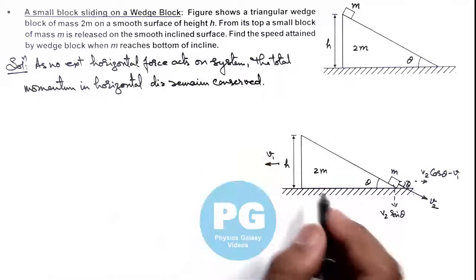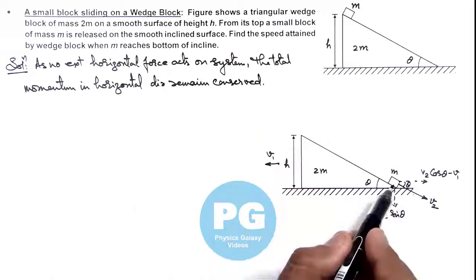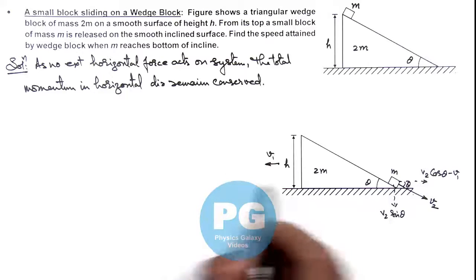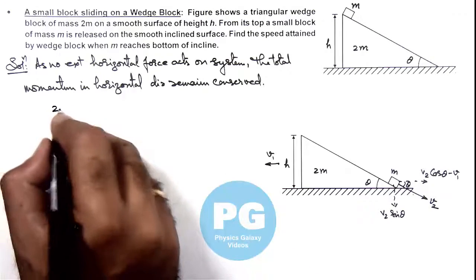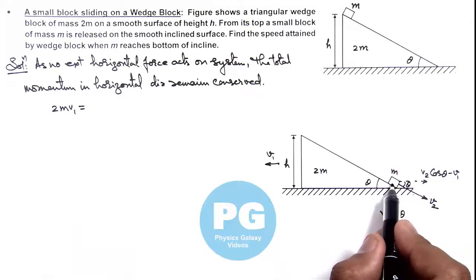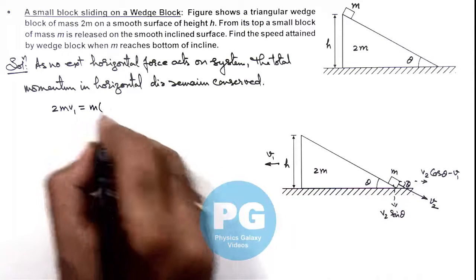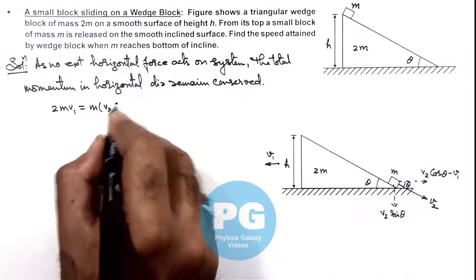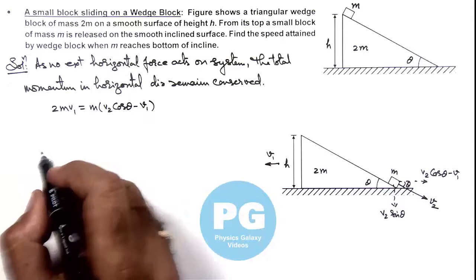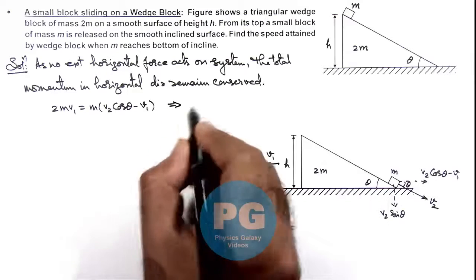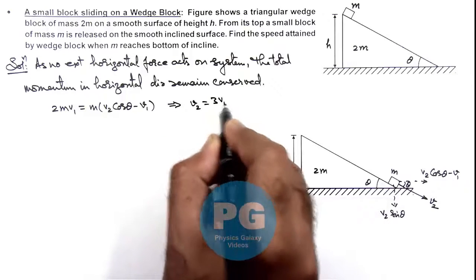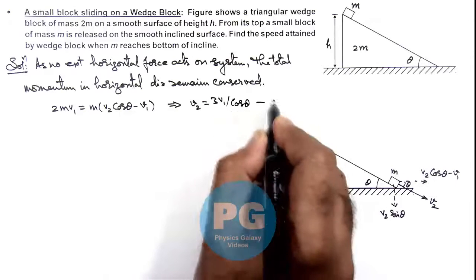So in this situation we can write when this small block reaches the bottom of this inclined wedge block, the leftward momentum attained by the block is 2m v1. This should be equal to the rightward momentum attained by this small block which is m multiplied by v2 cos theta minus v1. And if we simplify this equation, we'll be getting the value of v2 is equal to 3 v1 by cos theta. Say this is our equation 1.